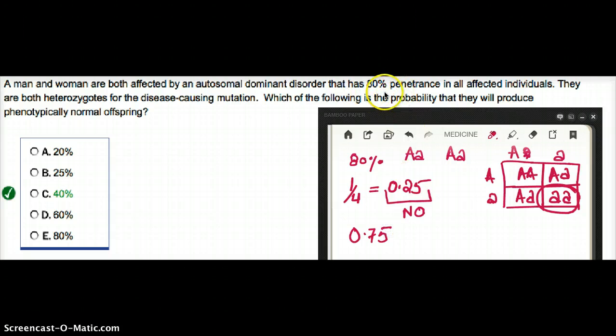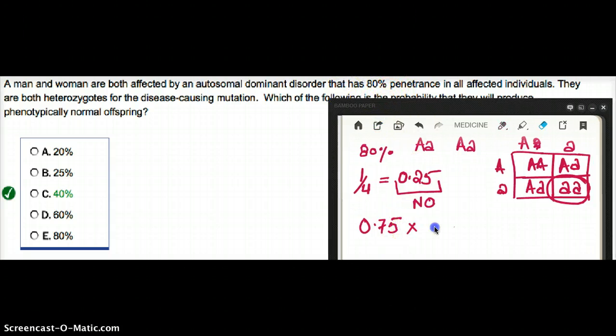And the penetrance of the disease is going to be 80%, so times 0.8 and we end up with 0.6. So that is the probability of the offspring that is going to be affected.